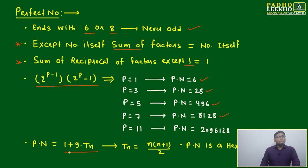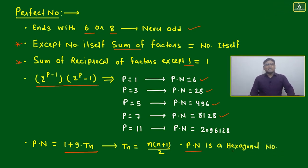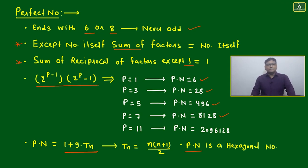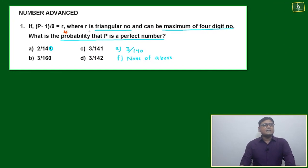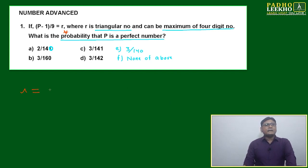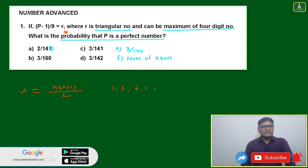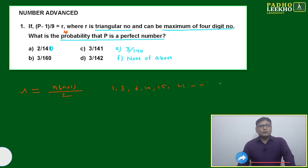Remember the first four perfect numbers because the next one is a seven-digit number, which is mostly out of scope. We have often used 496 but didn't know it was a perfect number. Now, a perfect number can be expressed in the form of 1 plus 9 times a triangular number, where a triangular number is n(n+1)/2. Actually, perfect numbers are hexagonal numbers, but we won't go into that — based on this expression only, I framed this question.